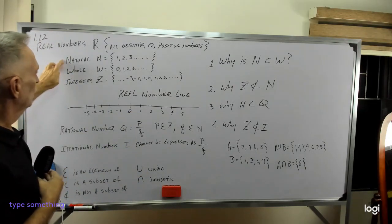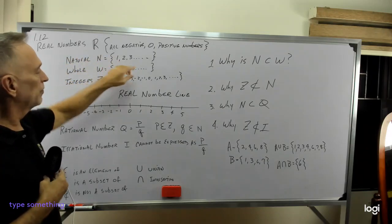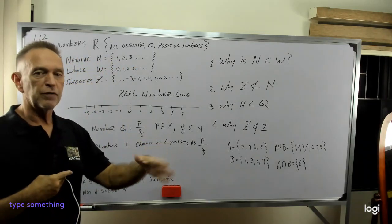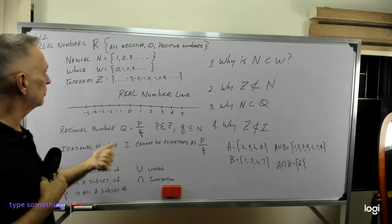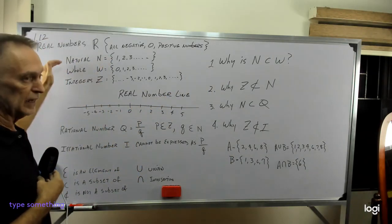Now natural numbers, it's the group of numbers that are 1, 2, 3, 4, 5, up through infinity. It does not include zero or any negative numbers.